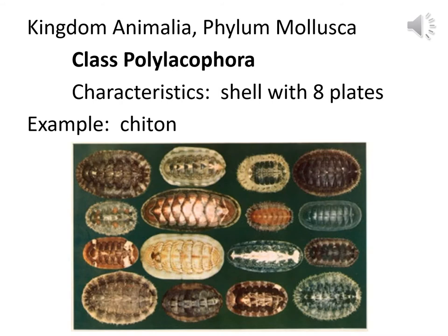Chiton is an animal you probably haven't heard of, and it is in Class Polyplacophora. The 'poly' part refers to many — probably plates or shells. These guys have lots of plates in their muscular foot — a shell with eight plates. If you look at the pictures, all of the chitons have eight sections. They kind of look like little roly-polies, but they do have eight plates along their backside. You might have to Google chiton and look for more pictures if necessary.